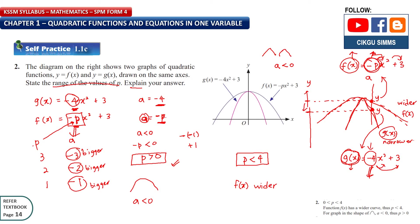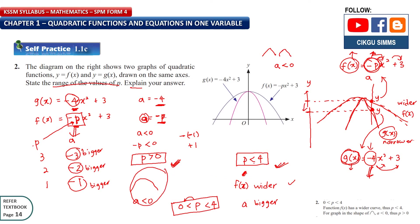Combining both conditions: b > 0 and b < 4. So the final answer for the range of b is 0 < b < 4. The reason b > 0 is because of the downward-opening shape, and b < 4 is because f(x) is wider than g(x).